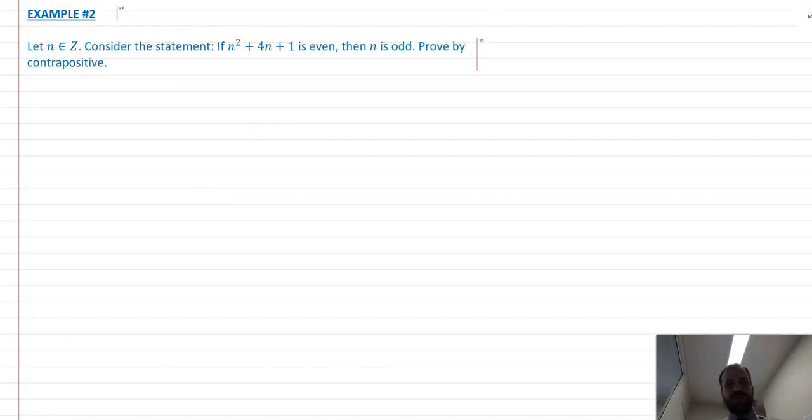Here's another one we're going to prove by contrapositive. Consider the statement: N squared plus 4N plus 1 is even, then N is odd. So P implies Q. Now I need not Q. N is odd is Q, so N is even is not Q. N is even implies N squared plus 4N plus 1 is odd.